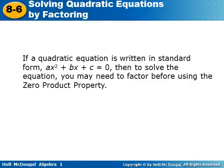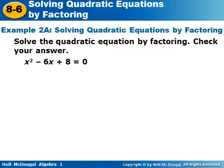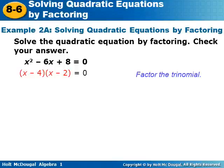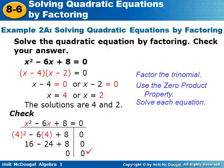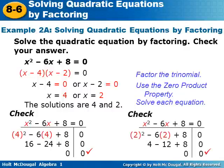If a quadratic equation is written in standard form ax² plus bx plus c equals zero, you may need to factor before using the zero product property. For x² minus 6x plus 8 equals zero, we factor the trinomial by finding two numbers that multiply to give 8 and add to give negative six: negative four and negative two. So we write (x minus four) times (x minus two) equals zero, apply the zero product property, solve for both, and get x equals four or x equals two. Checking by substituting four and two back into the original equation both give zero equals zero.